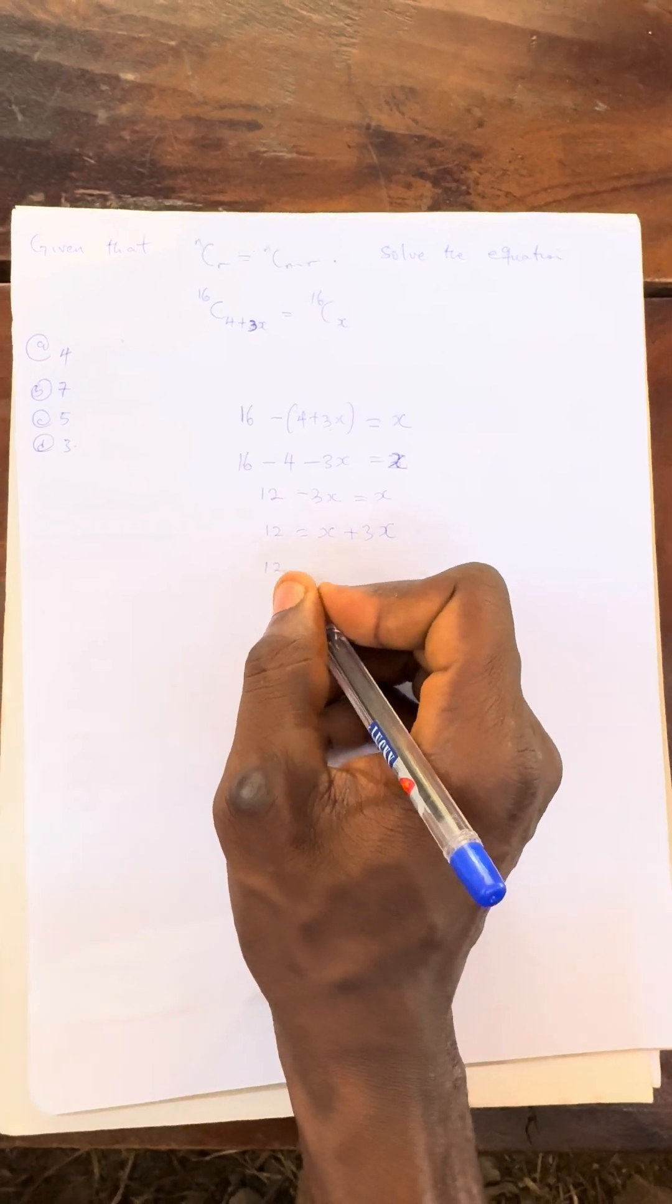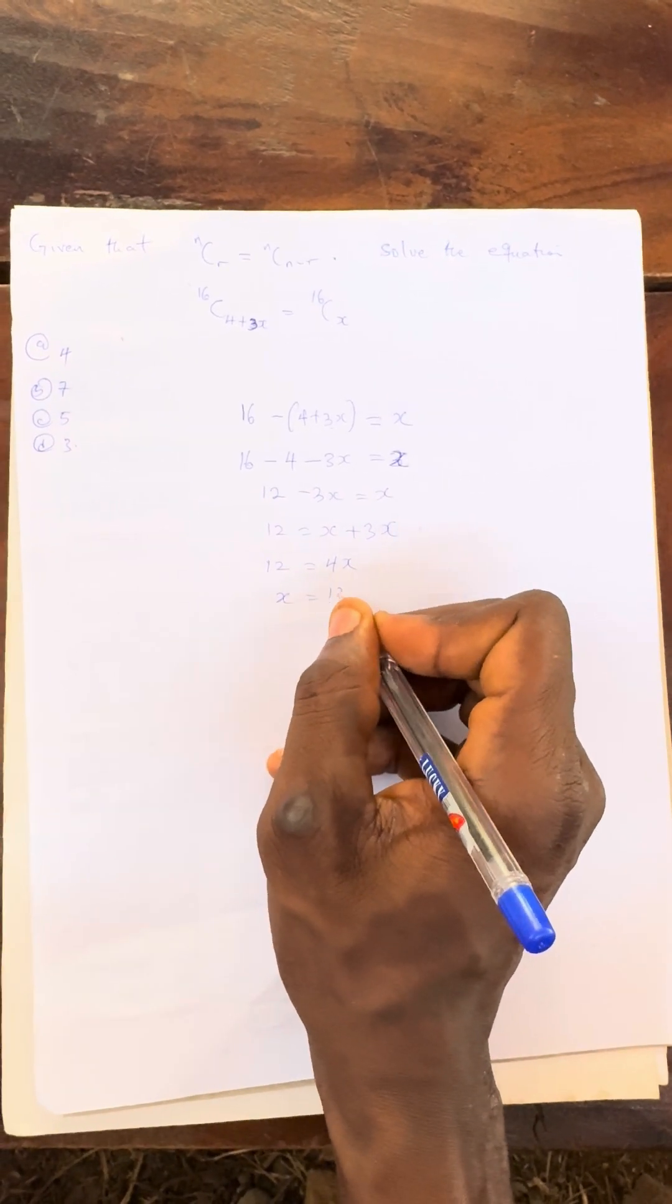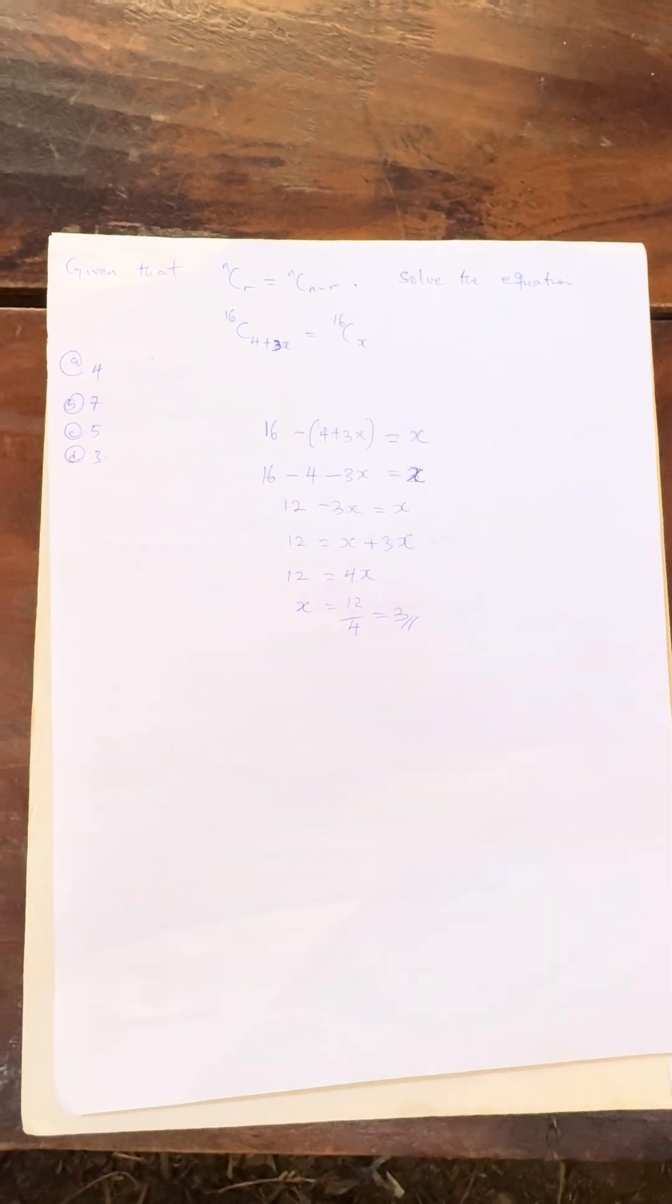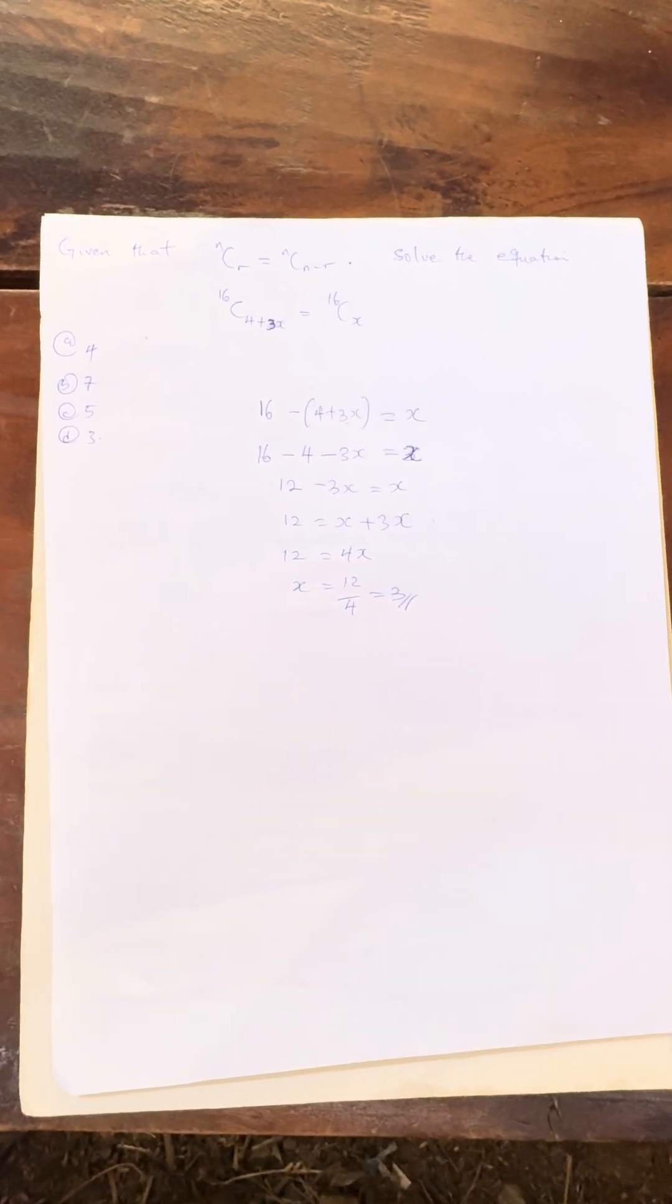Then finally I have 12 to be equal to 4x. Then x is equal to 12 over 4. Finally x is equal to 3. Now I believe you can use this formula to solve the question.